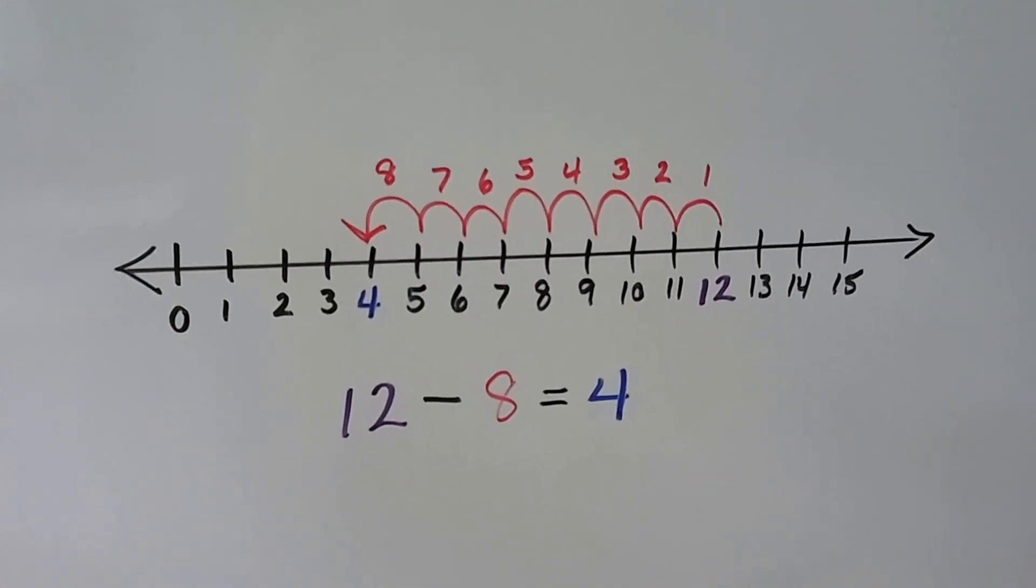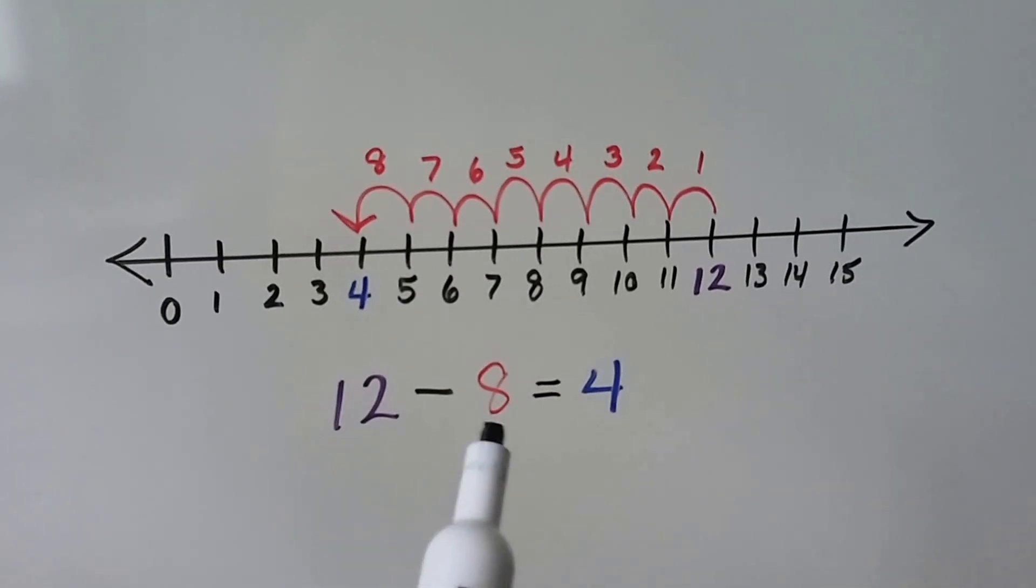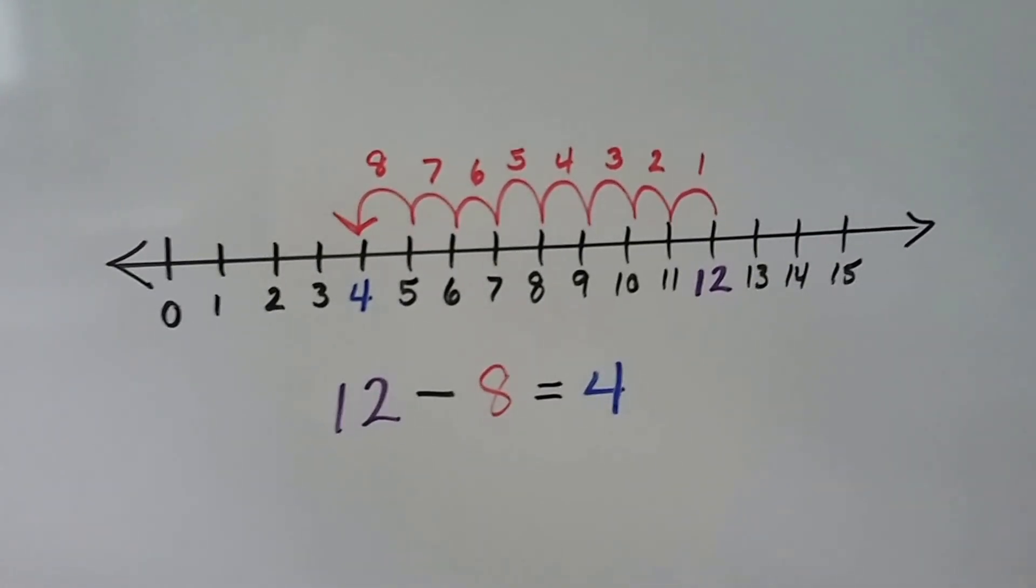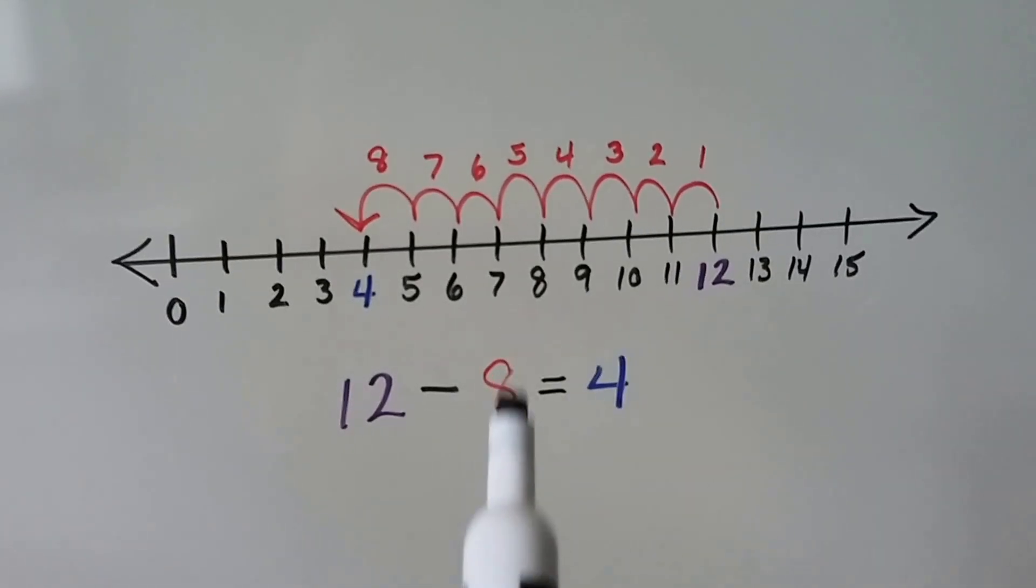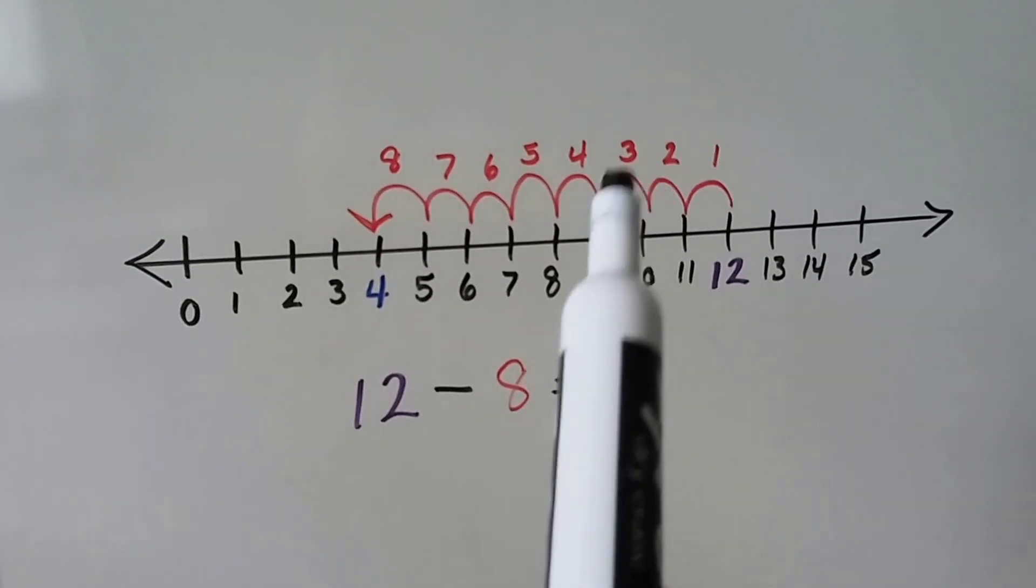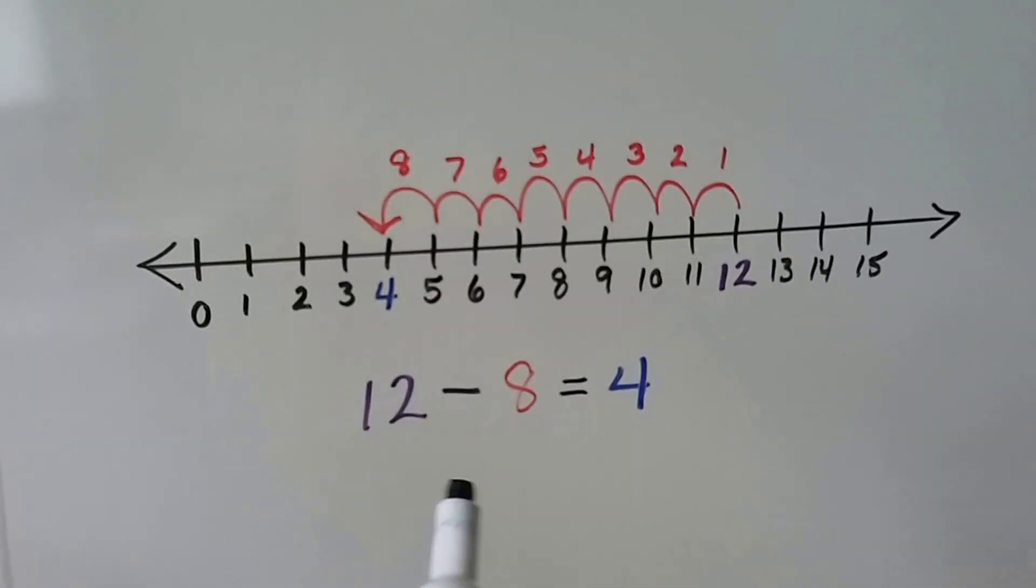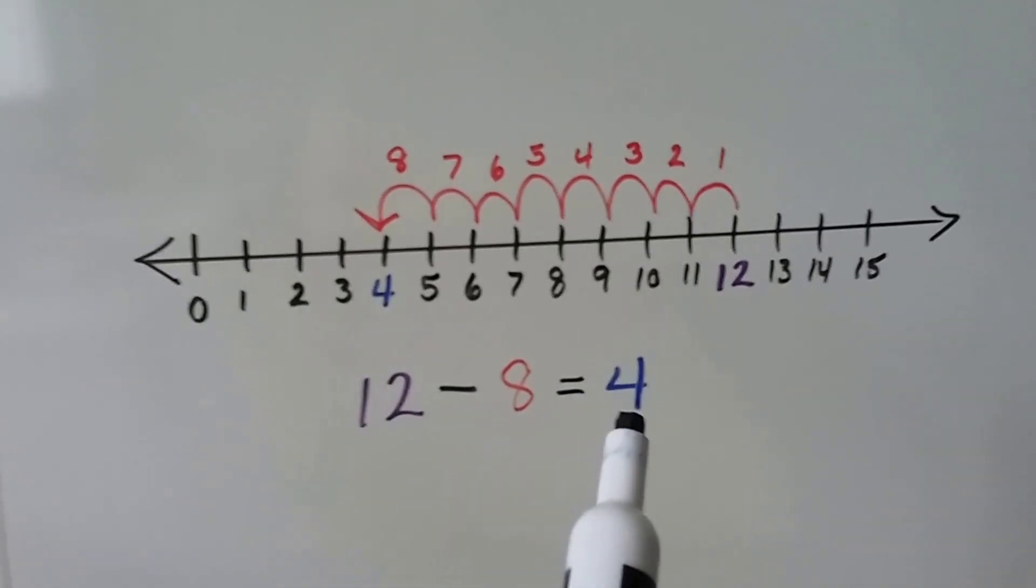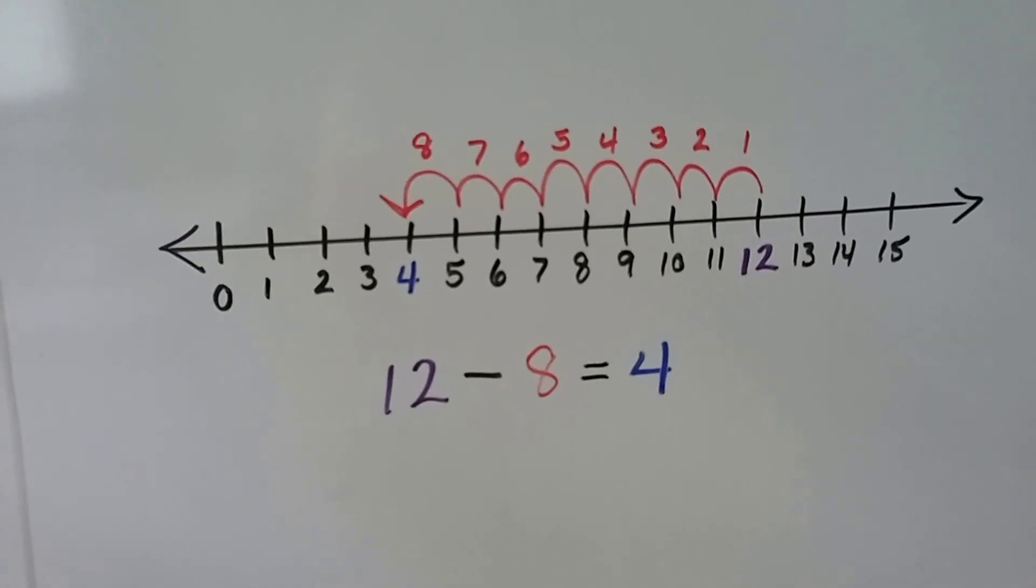Here we have a number line. We're going to do 12 minus 8. The 12 is the minuend and the 8 is the subtrahend. We're going to start on the 12, right here, and we're going to hop 8 times. 1, 2, 3, 4, 5, 6, 7, 8. We land on the 4. The 4 is our difference. 12 minus 8 equals 4.